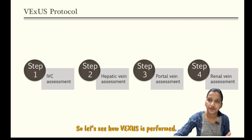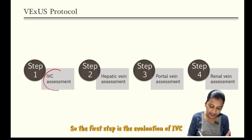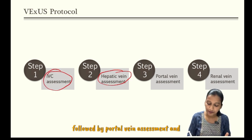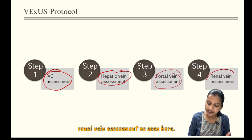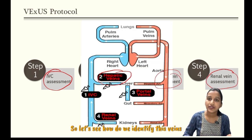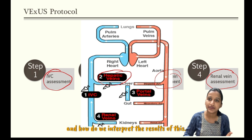So let's see how VEXUS is performed. The first step is the evaluation of IVC, followed by hepatic vein assessment, followed by portal vein assessment, and renal vein assessment as seen here. So let's see how we identify these veins and how we interpret the results.